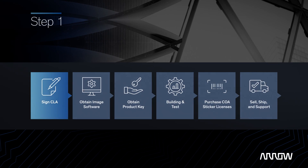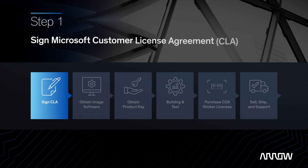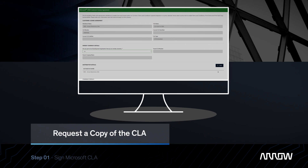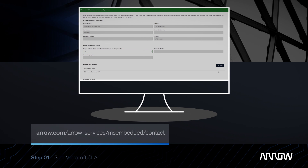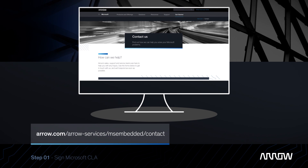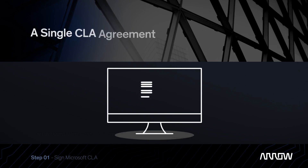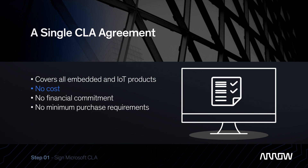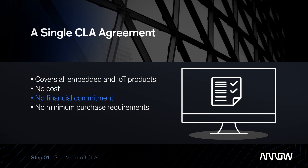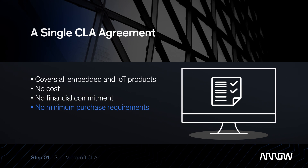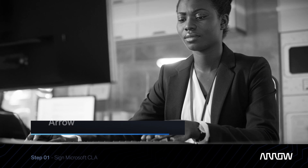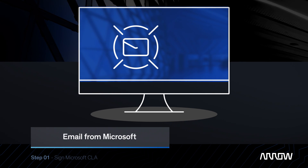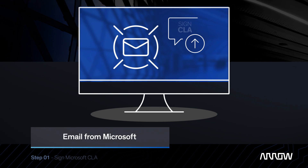First, sign a Microsoft Customer License Agreement electronically. You can request a copy of the CLA in the Microsoft Getting Started section of the Aero page. A single CLA agreement covers all embedded and IoT products. There's no cost, financial commitment, or minimum purchase requirements. Once completed, the Aero team will initiate the process and you will get an email from Microsoft to electronically sign the CLA.